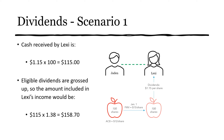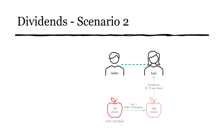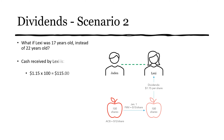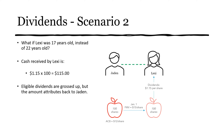Now let's look at a different scenario: what if Lexi were 17 years old instead of 22? The cash received by Lexi is still $1.15 × 100 shares = $115. However, this is where the attribution rule under 74.1(2) kicks in — this income is attributed back to Jayden. The eligible dividends are still grossed up, but the amount attributes back to Jayden: $115 × 1.38 = $158.70 included in Jayden's income.